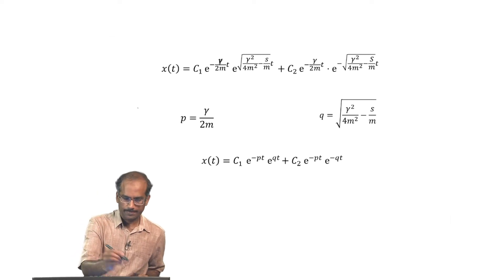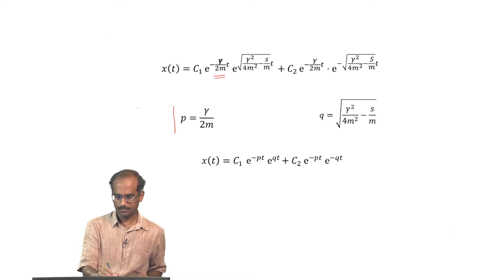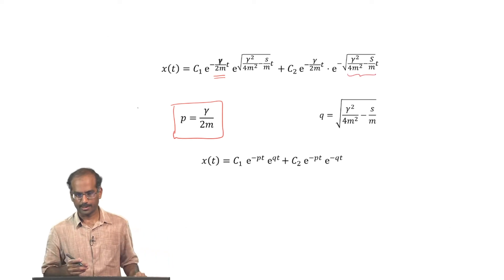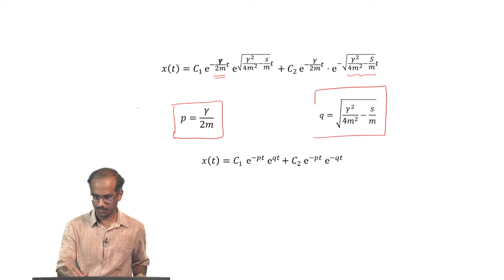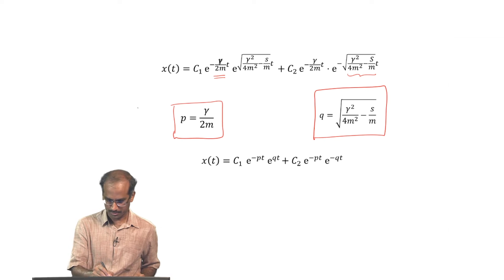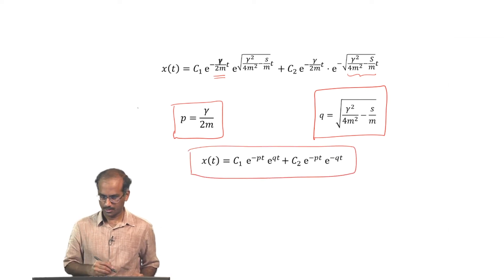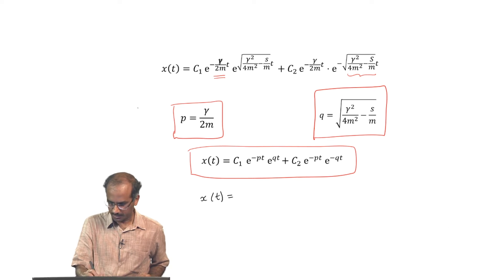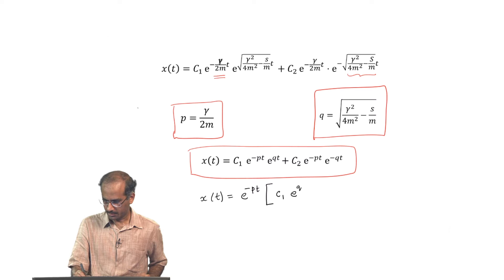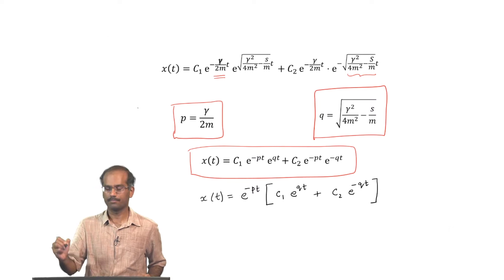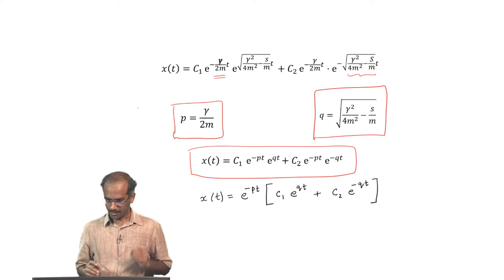To do further analysis, let us simplify the equation with a notational simplification. I am going to call gamma over 2m as p, and the entire quantity under the square root — including the square root itself — I would like to call q. It is just a change of notation. When I substitute back, I get the equation: x(t) = e^(−pt) [C1 e^(qt) + C2 e^(−qt)].